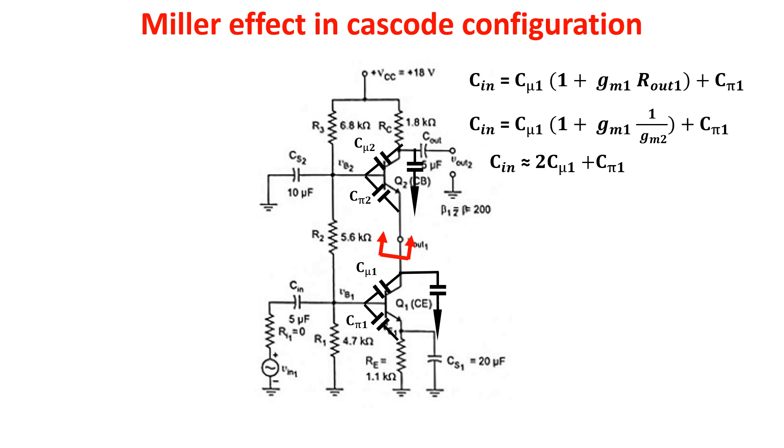The important aspect here is that the Miller effect is low because the gain of Q1, the common emitter, is low because of the low value of the emitter resistance of Q2.